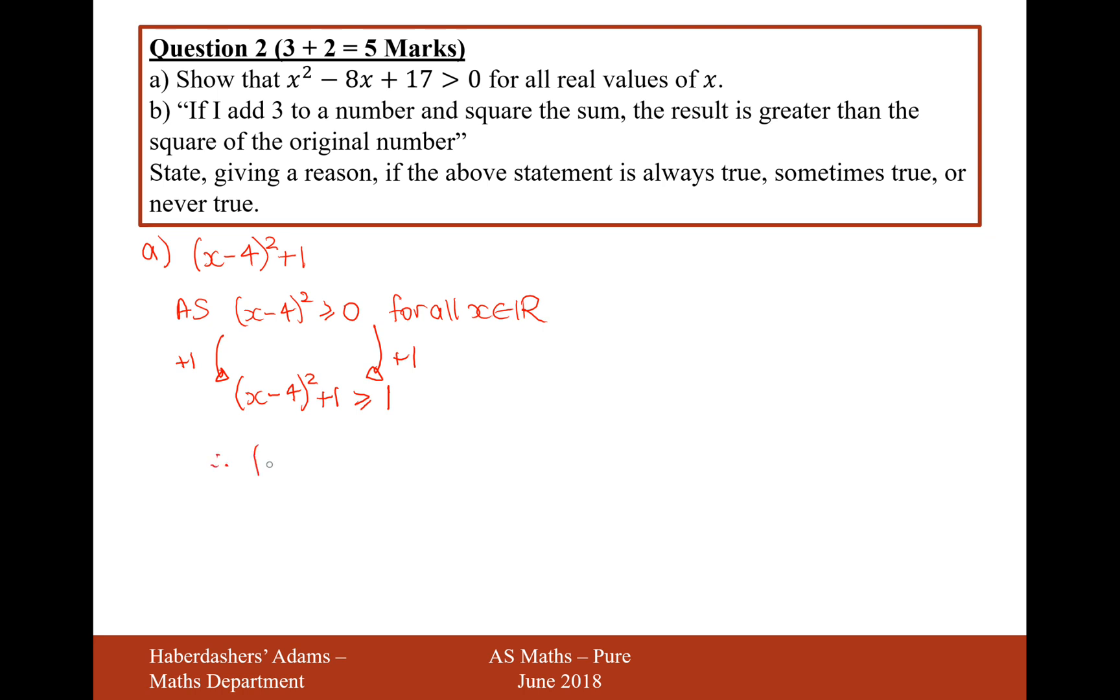So therefore what we can say is that x minus 4 squared plus 1 is going to be bigger than or equal to 1. So therefore it must be greater than or equal to 0 for all x existing in the real set of numbers.